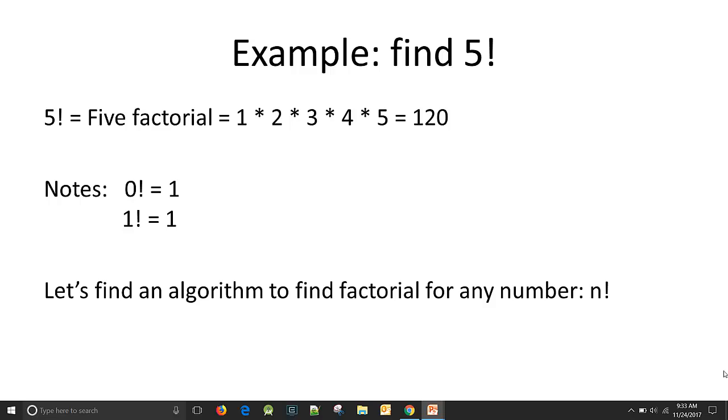So let's start by showing an example: find 5 factorial. Don't worry if you don't know what factorial is, I'm going to explain it right now. It's written as 5 exclamation point. What factorial is, is that number 5 times every number smaller than it. So 5 times 4 times 3 times 2 times 1. You just multiply all those numbers together, and you get 120.